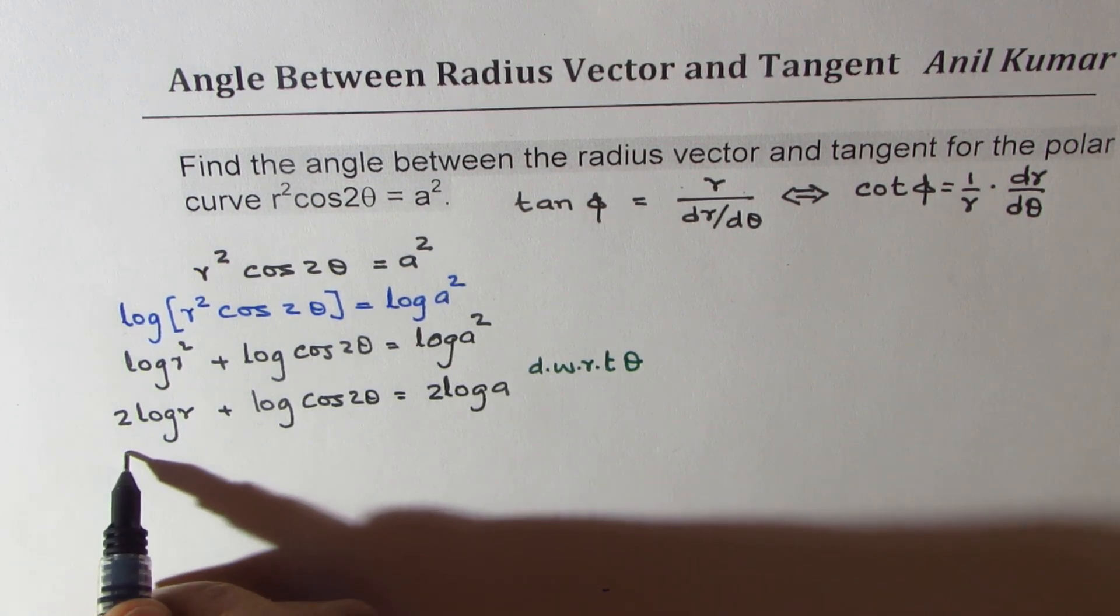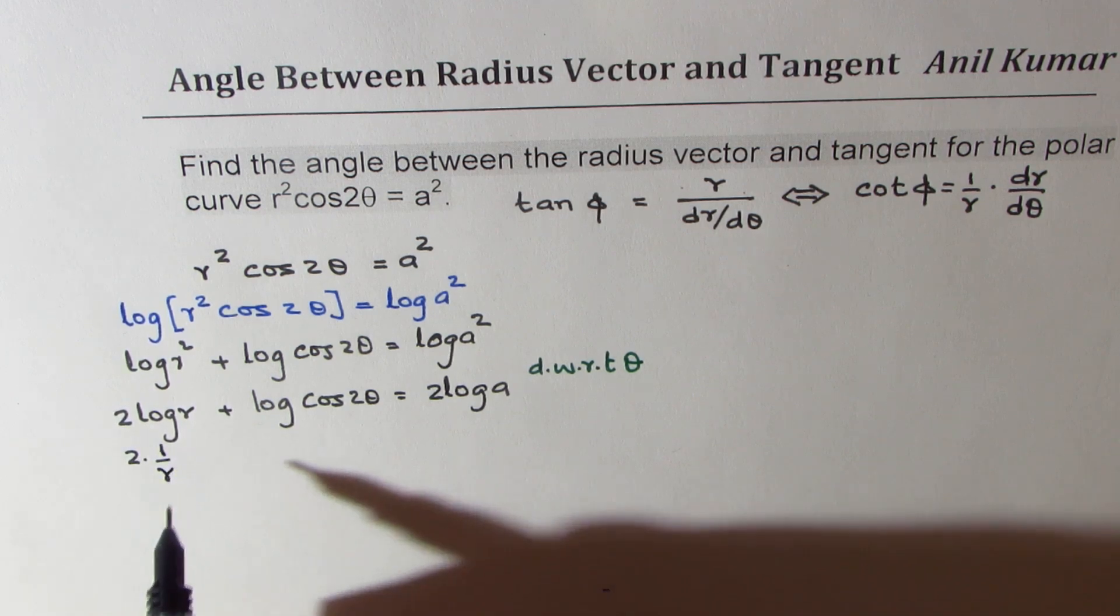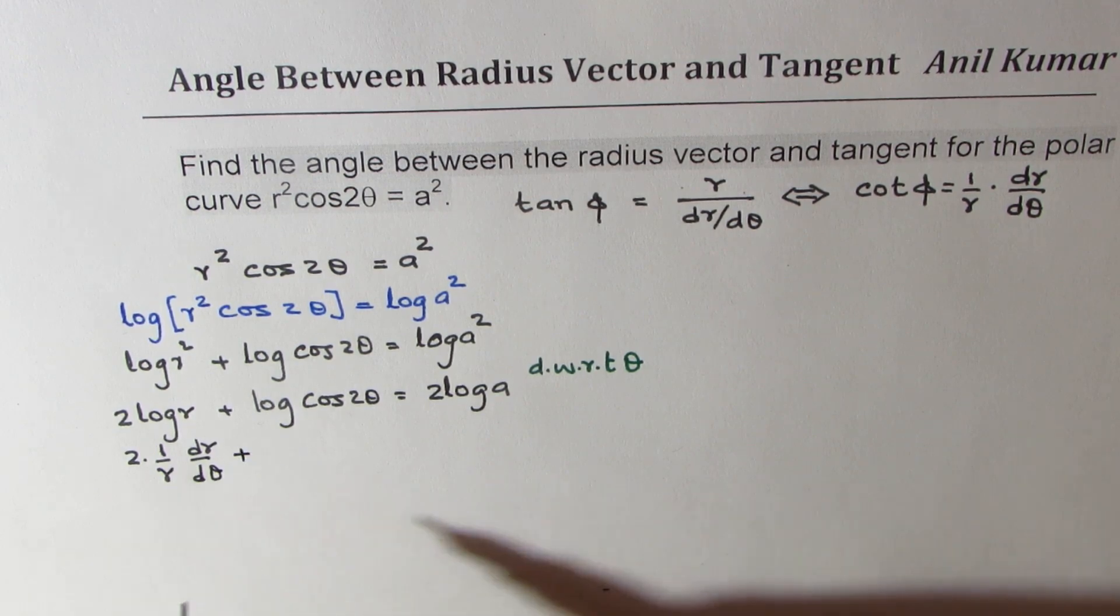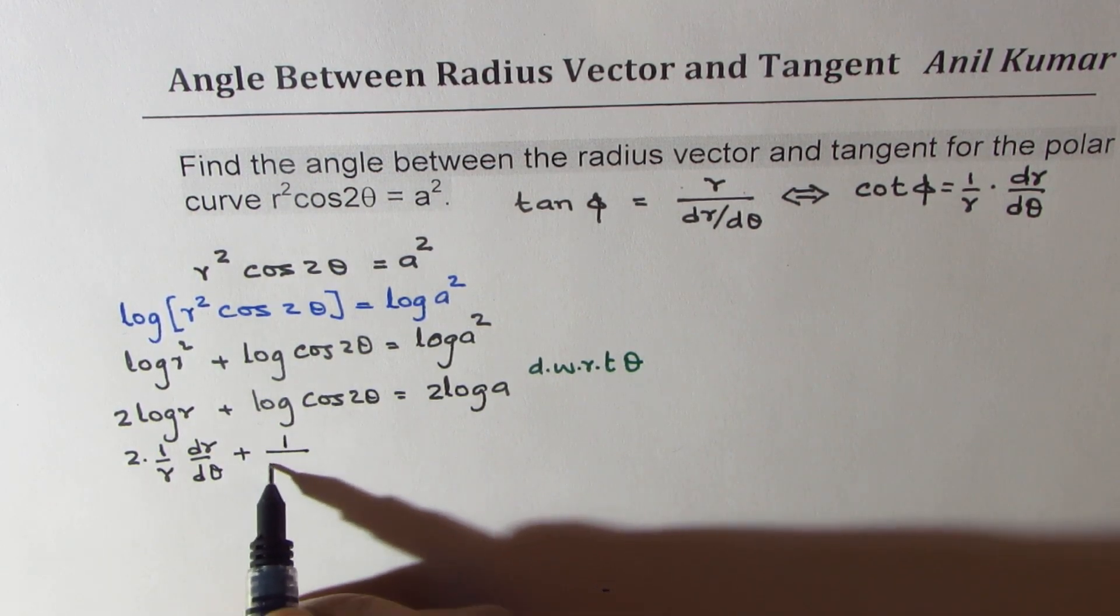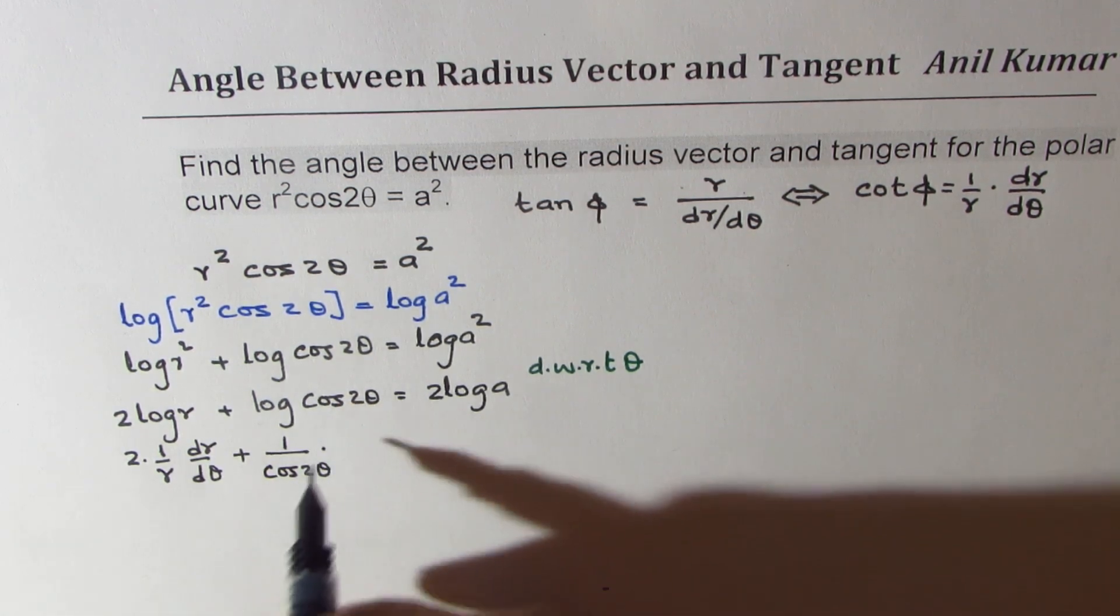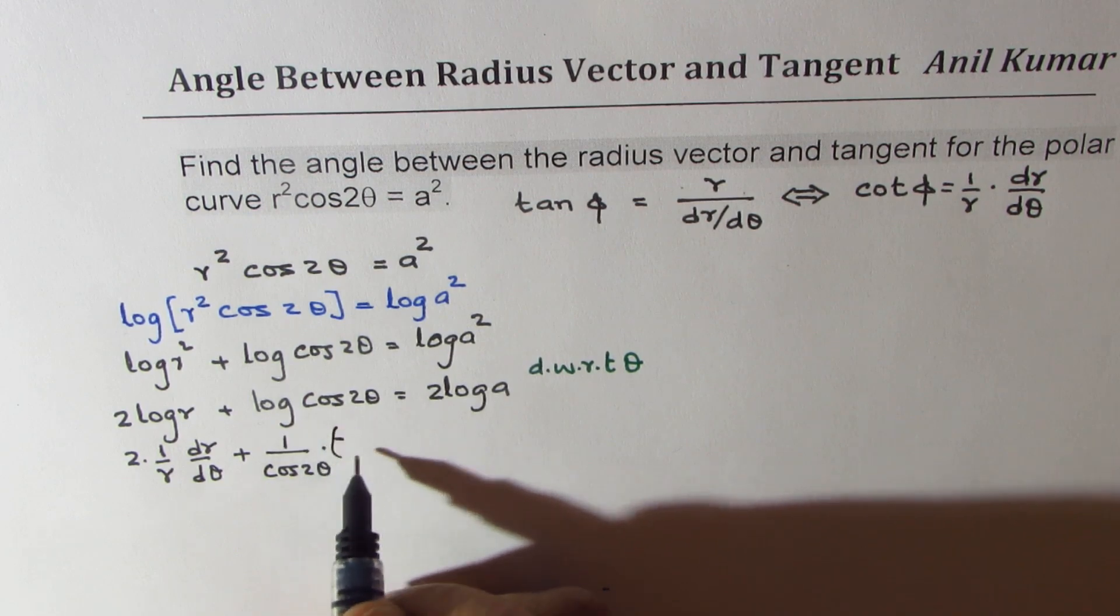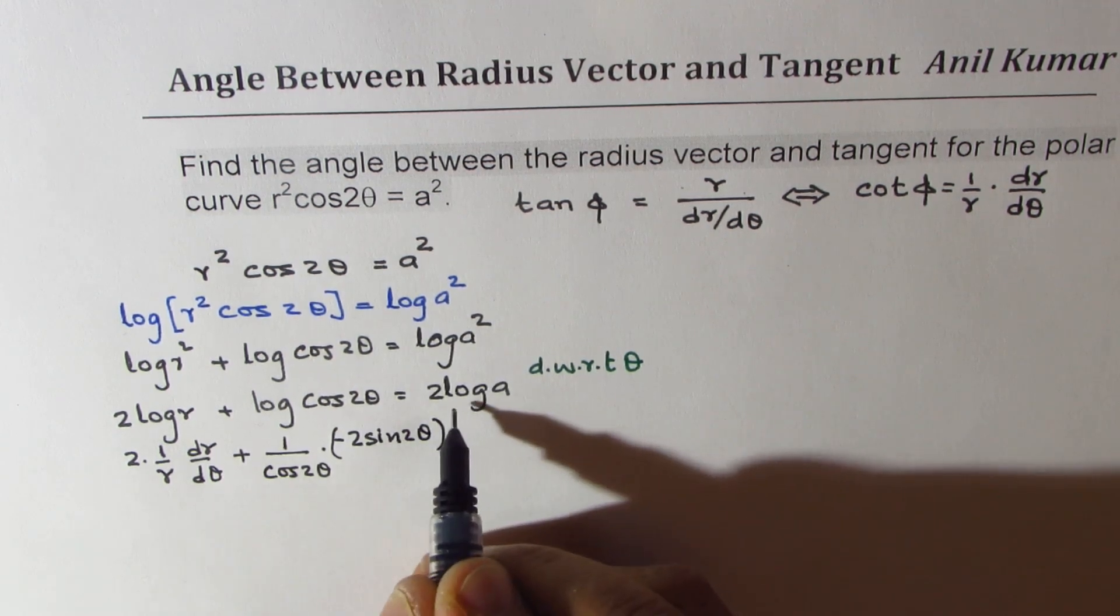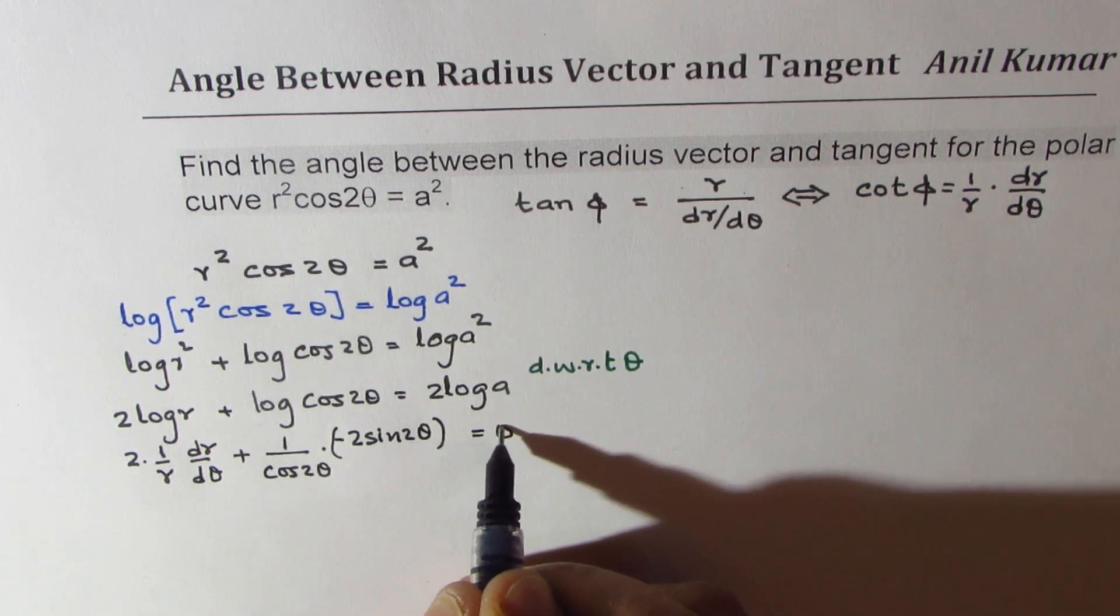We get 2 times 1/r dr/dθ plus 1/cos 2θ times derivative of cos 2θ which is -2 sin 2θ and this is a constant equal to 0.